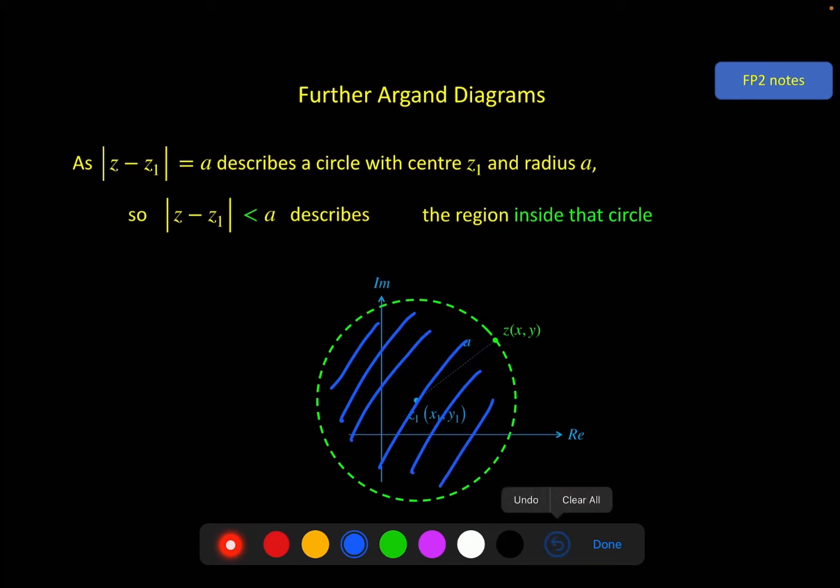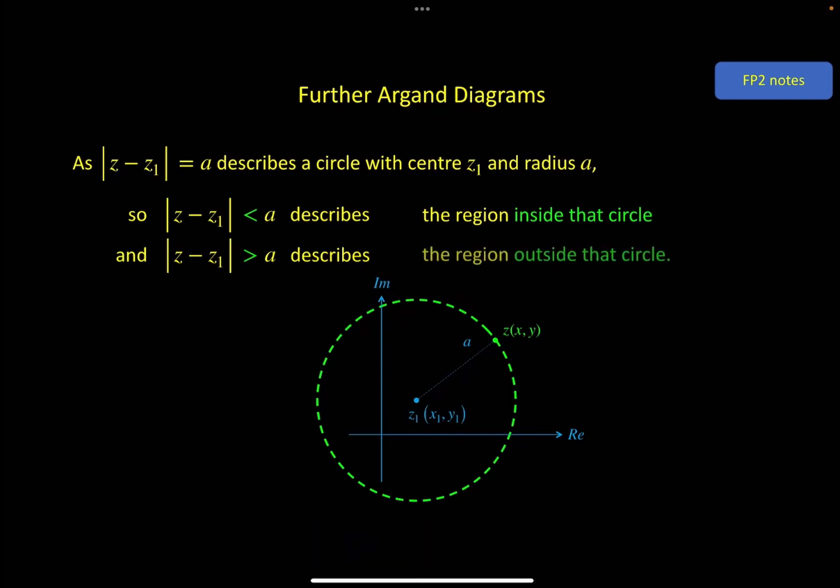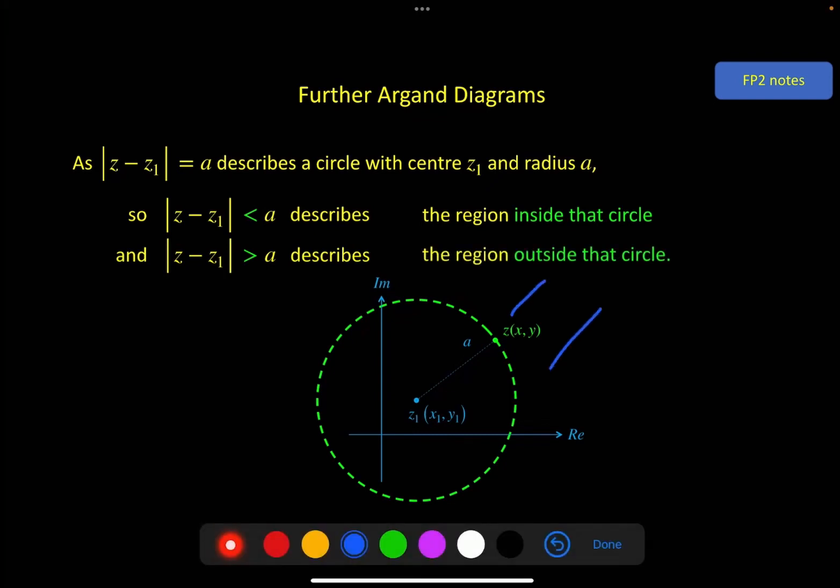And of course, if we were to do greater than a, that describes anything outside the circle. And as mentioned on the starter, if you want to include the circle as part of the region, then you just put a little equal sign on one of these. In that case, you should be drawing the circle with a solid line, not a dashed line.